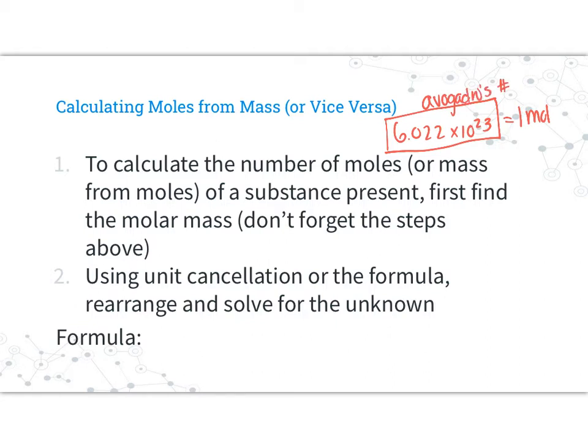We won't use it very often, but it's just important to remember that mole is a way of counting, like talking about pairs or a dozen. It's just a bigger number because atoms and molecules and ions are so very small. To calculate the number of moles or mass from moles of a substance, we first find the molar mass, and then we're going to use unit cancellation or the formula below.